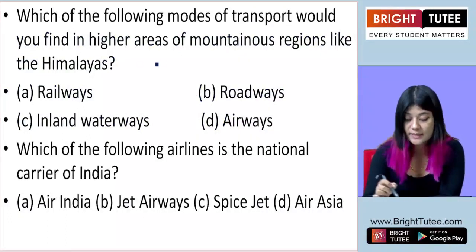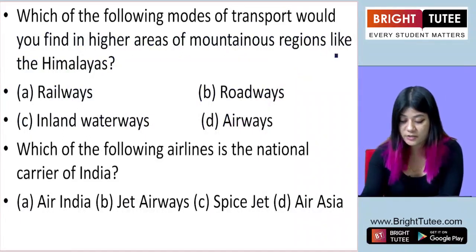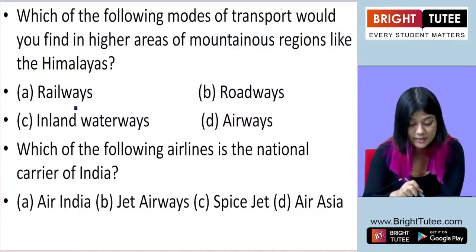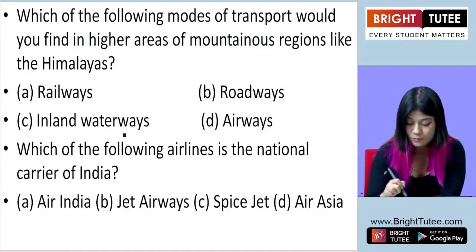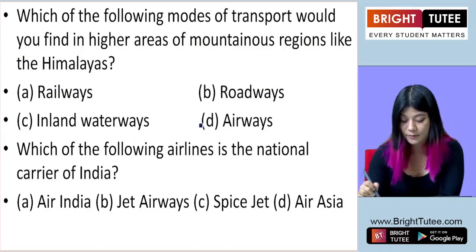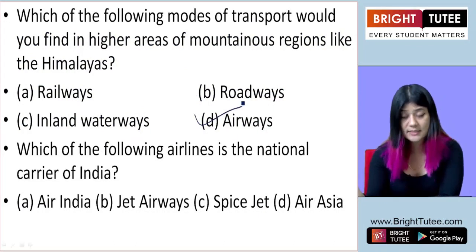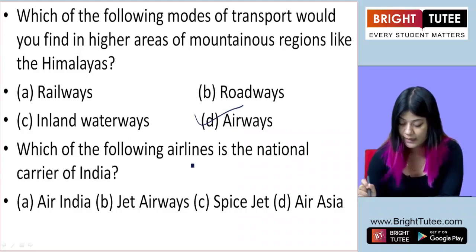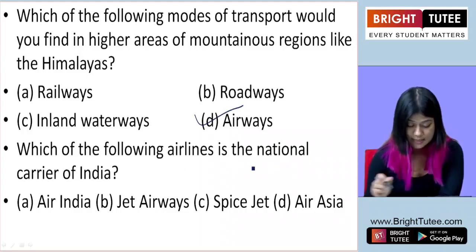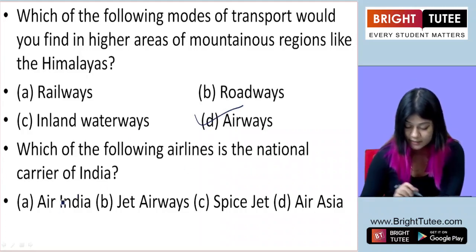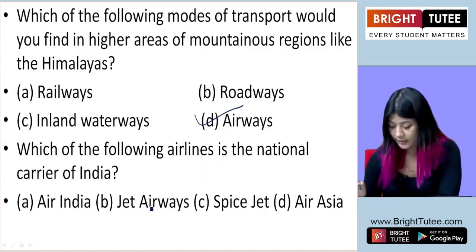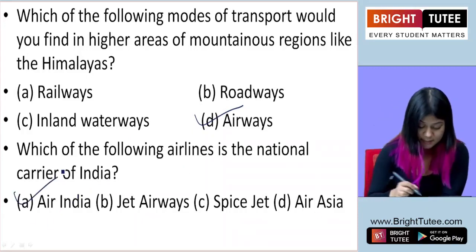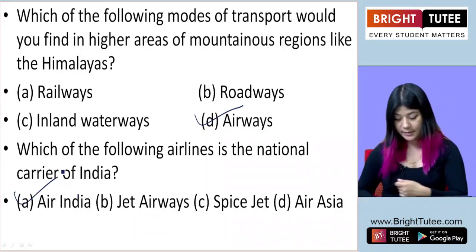Which of the following modes of transport would you find in higher areas of mountainous regions like the Himalayas — railways, roadways, inland waterways, or airways? It is airways. Which of the following airlines is the national carrier of India — Air India, Jet Airways, SpiceJet, or Air Asia? The correct answer is Air India.